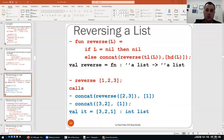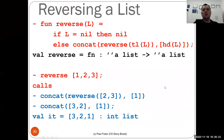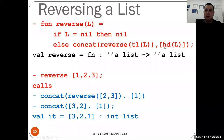Hi everyone. We will continue with functional programming in SML from where we left last time. We stopped at reversing a list. We described an algorithm in which the reverse of a list is computed recursively. If the list is empty — the base case — it returns empty. Otherwise, you concatenate the reverse of the tail of the list with the head. Because of the comparison with nil, the inferred type for list L is any list with comparable elements.